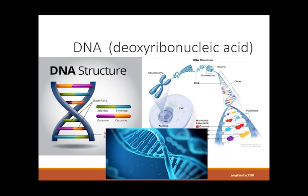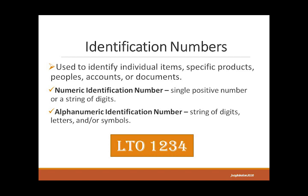The DNA, or the deoxyribonucleic acid, so you can now trace who your parents are. We also have codes which represent identification numbers, so that you can identify items, products, accounts, documents, and even people. There are two types of ID numbers: the numeric ID, which uses a string of digits, and the alphanumeric ID, which combines letters and numbers.